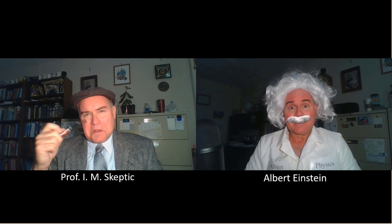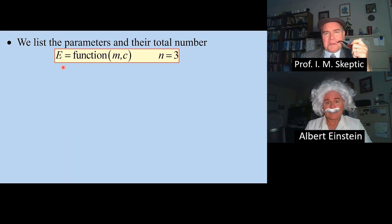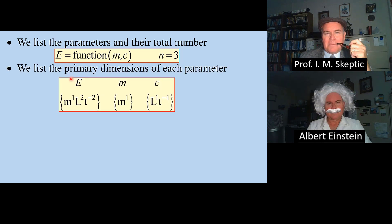Dimensional Analysis can help. Let me share my screen. First, we list the parameters. There are three of them. Then we list the primary dimensions of each parameter. In the MLT system, the dimensions of energy, mass, and speed of light are shown.